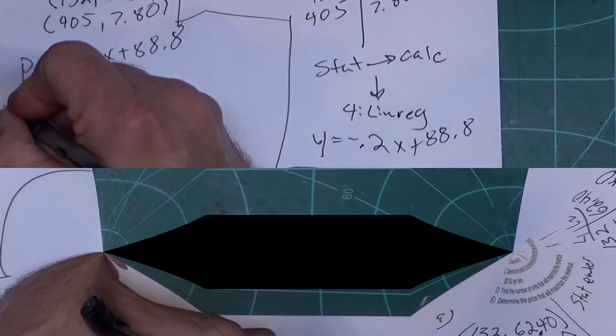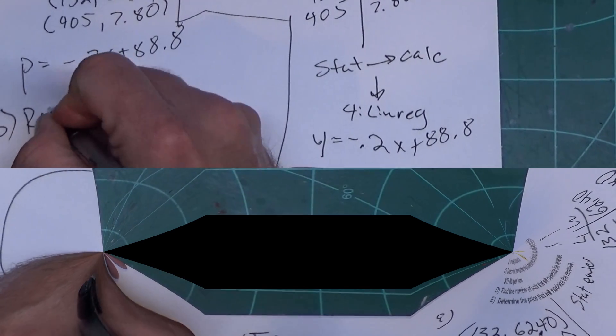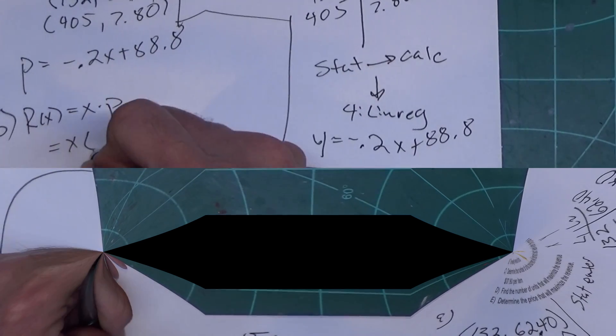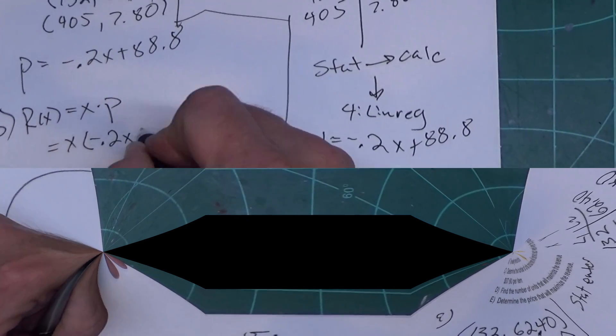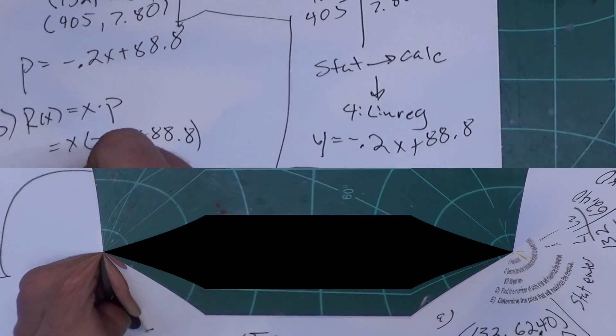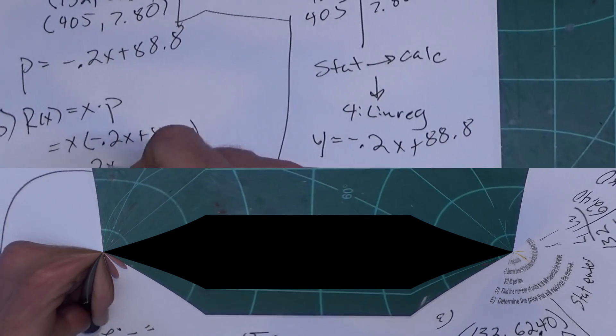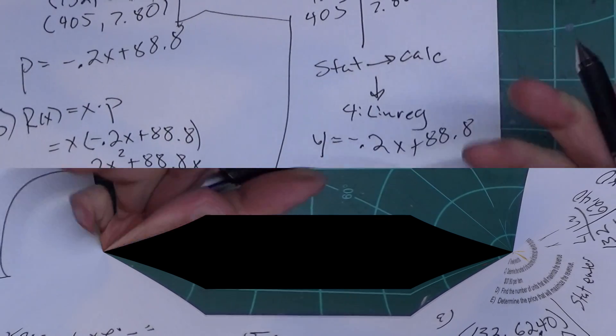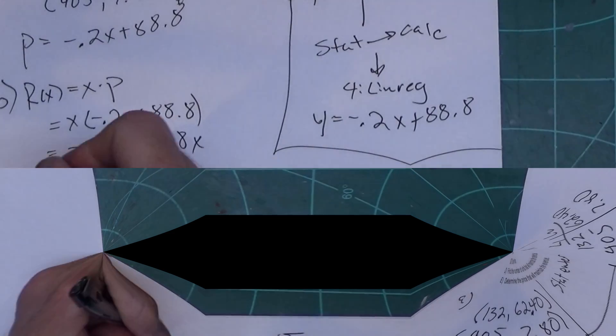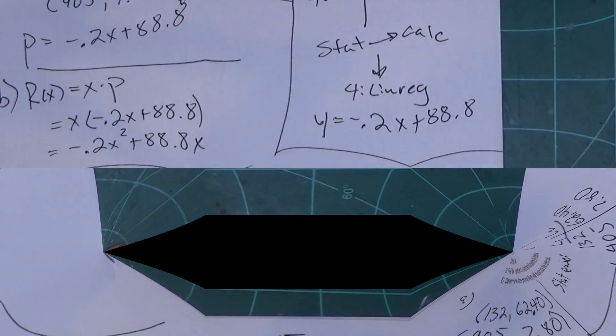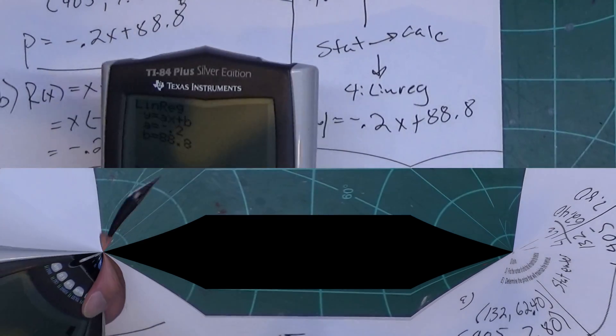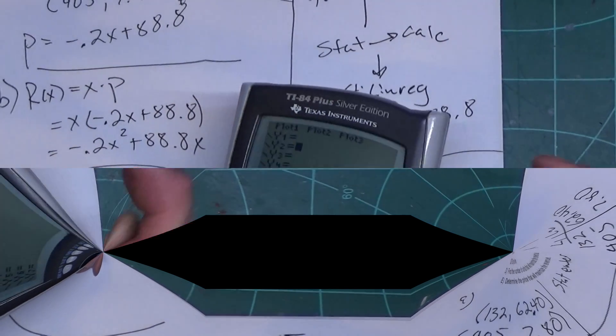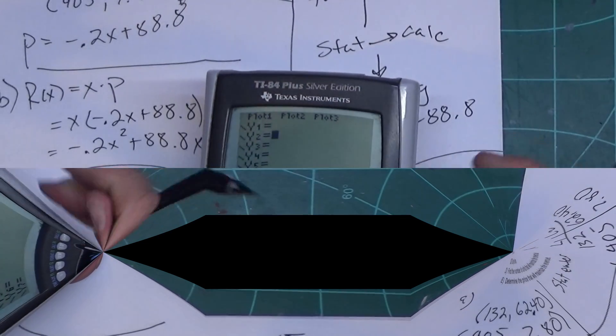All right, so I got my weekly demand function. Now to get revenue, part B, revenue is x times P, so it's just x times negative 0.2x plus 88.8. So it's negative 0.2x squared plus 88.8x. So there's my revenue function.